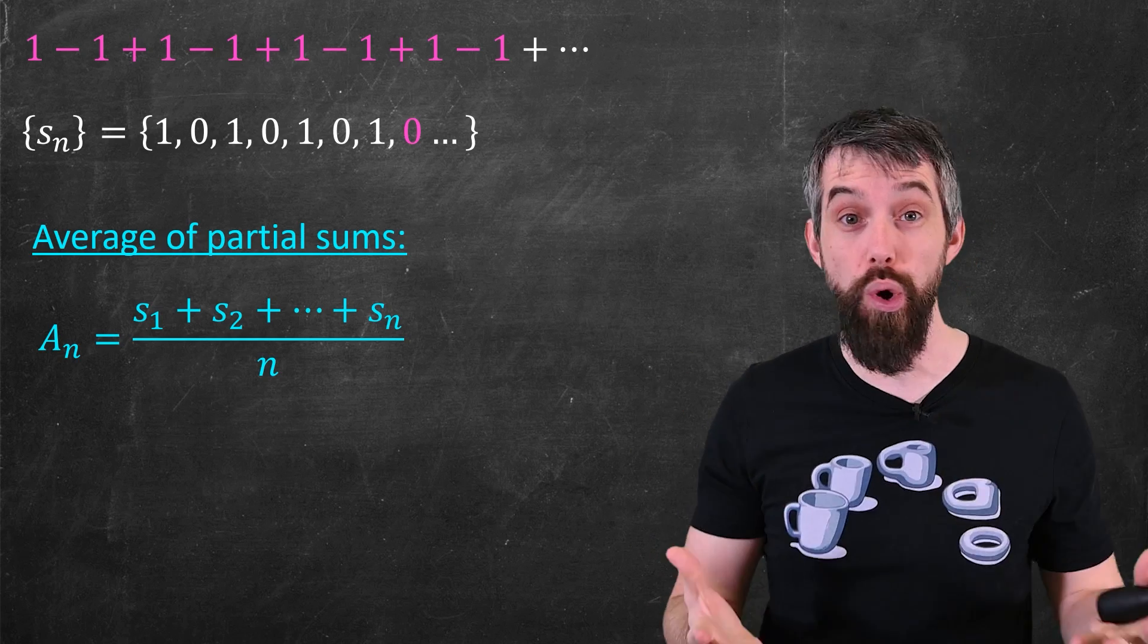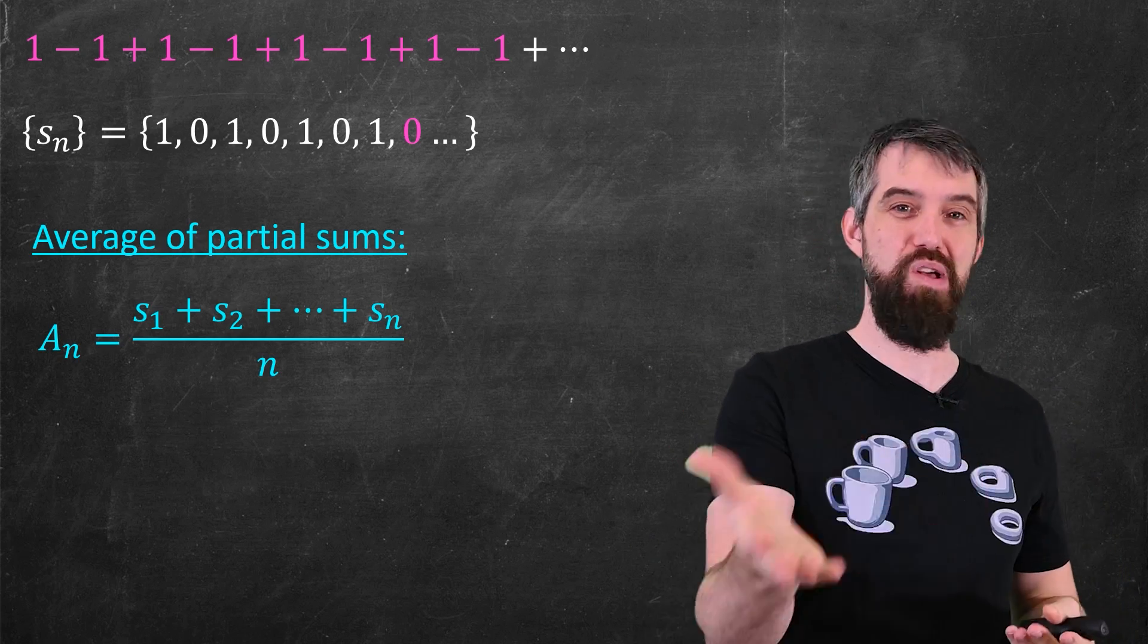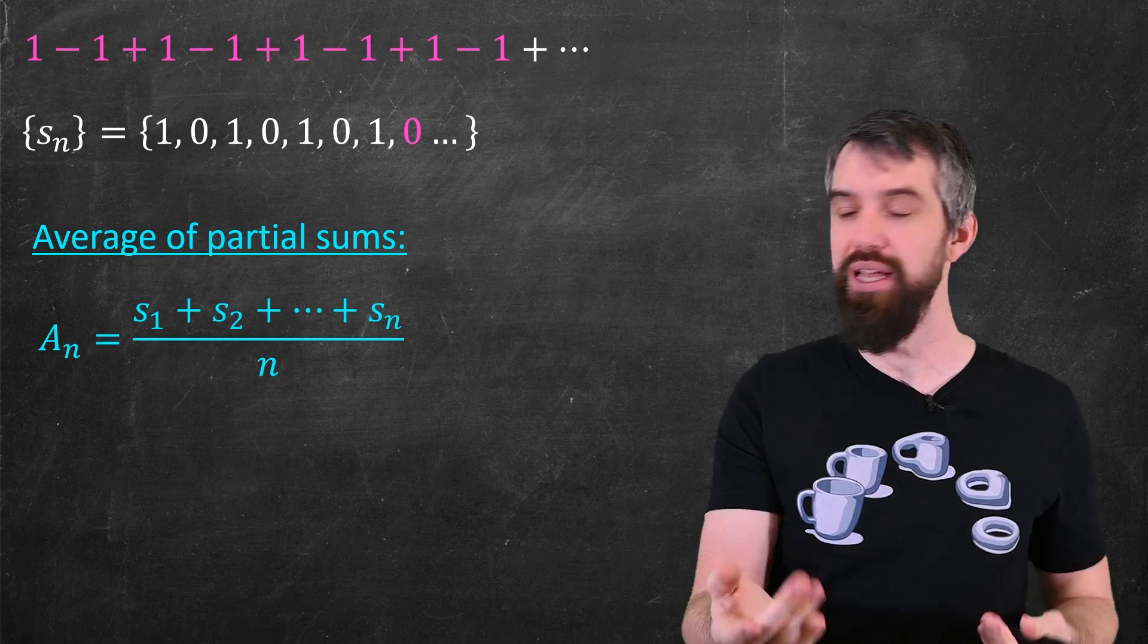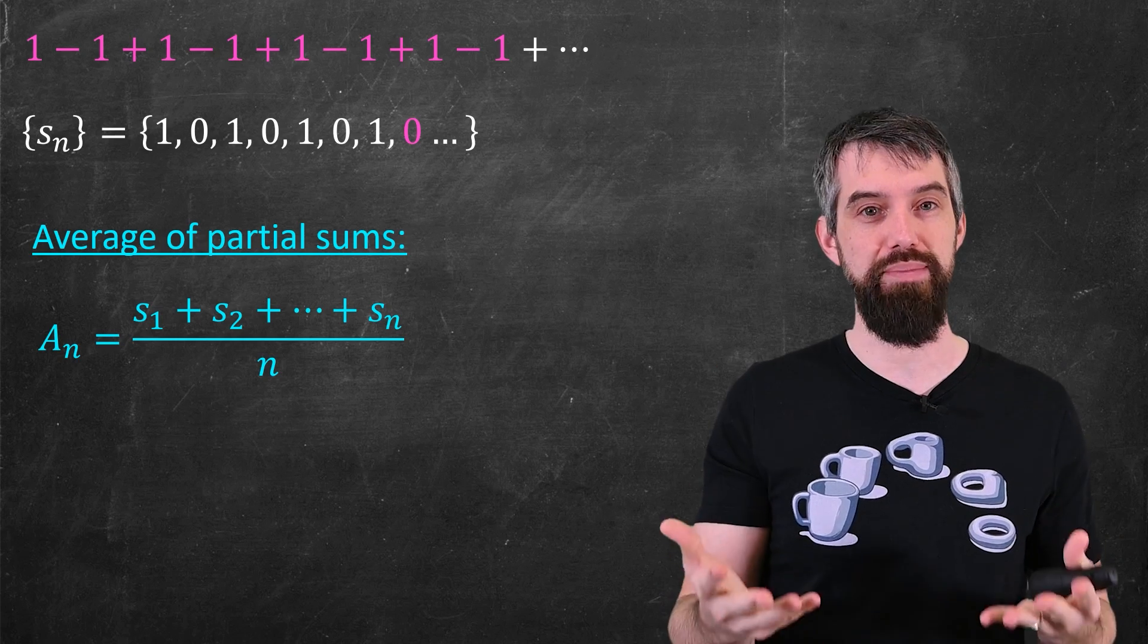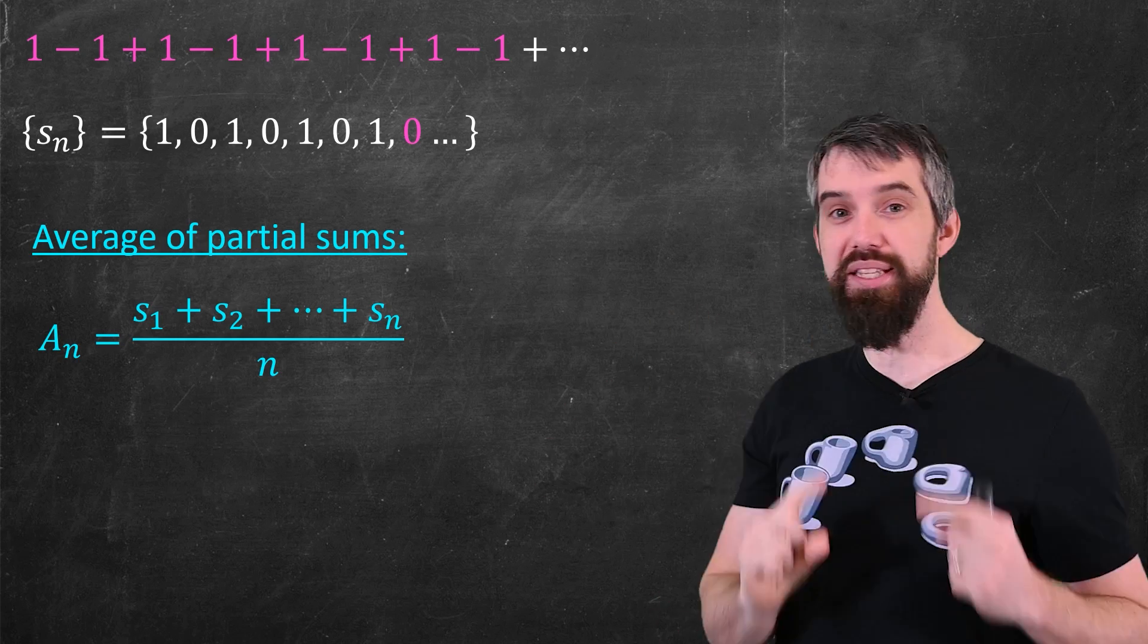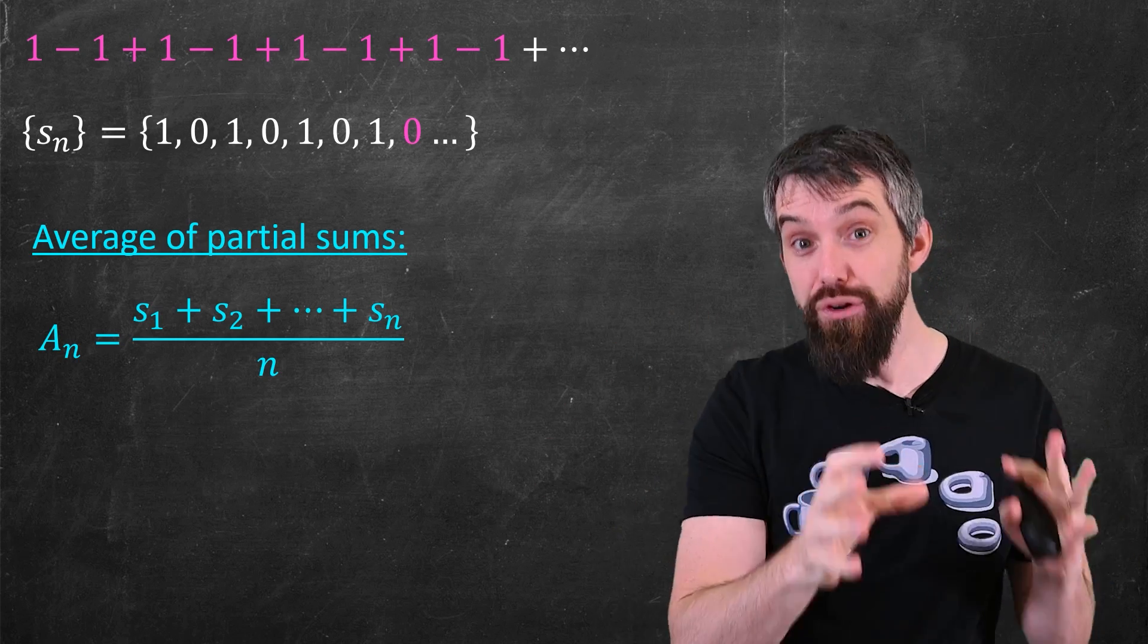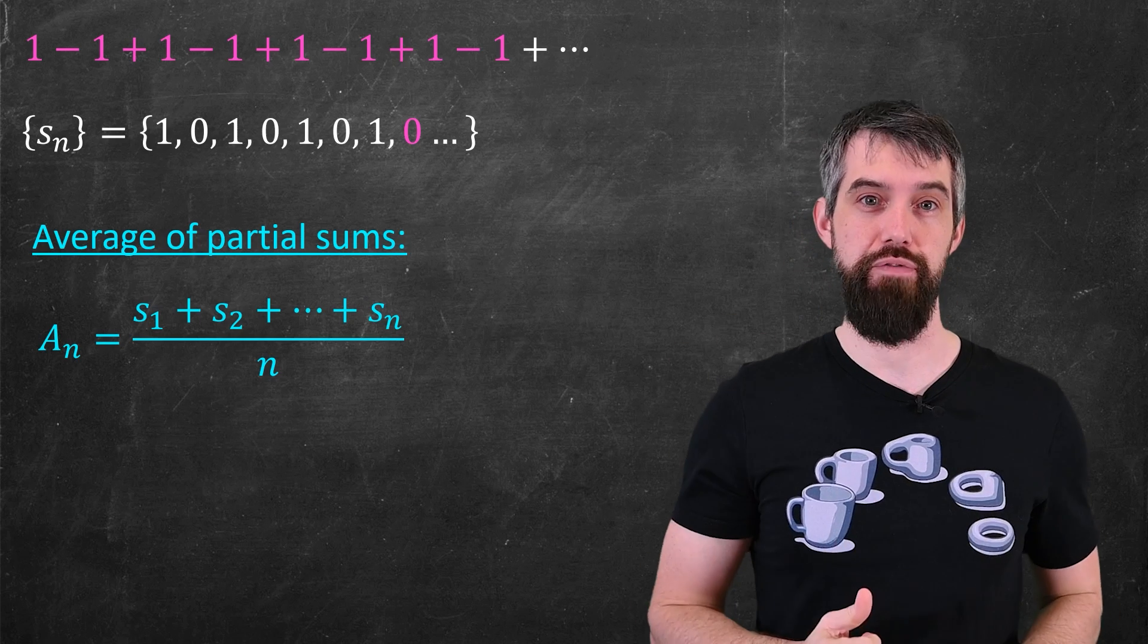Right? Like, if I want to take the average score of my students on a test, I would add up all their scores and divide by the number of students. So this is the case. I add up all the partial sums and divide by the number of partial sums that I'm doing. And in this example, the average of the partial sums is going to converge.